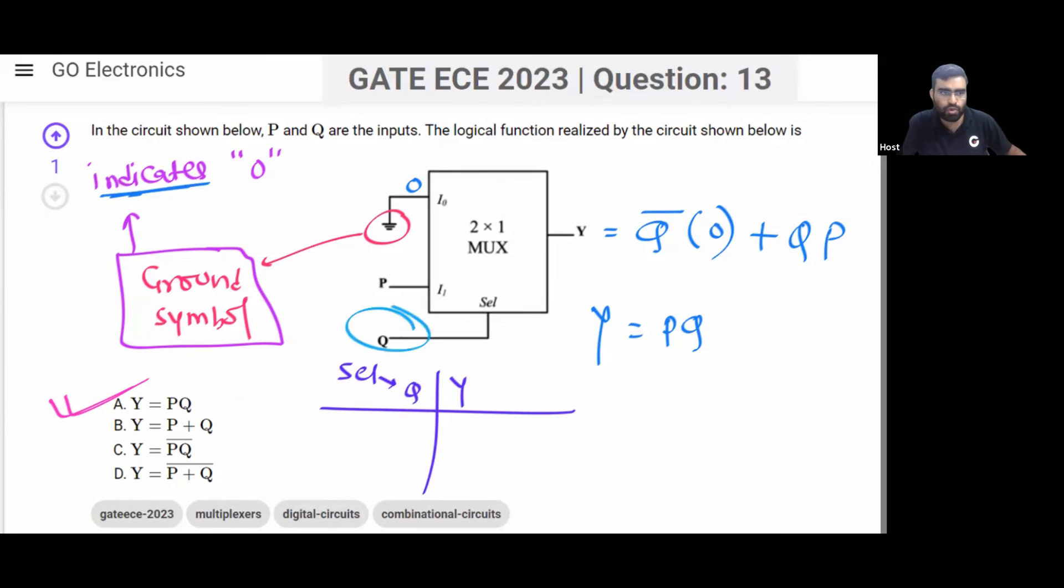Now you can see, when this Q is 0, then output will be I0, that is same as 0. When this Q is 1, then output will be same as I1, that is P.